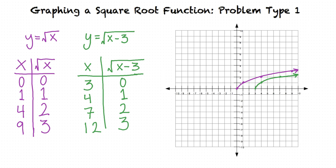But if we add a number outside of the radical, the graph of the function is shifted up that many units. And if we subtract a number outside of the radical, the graph of the function is shifted down that many units? That's right.